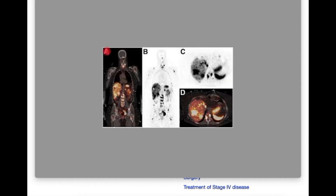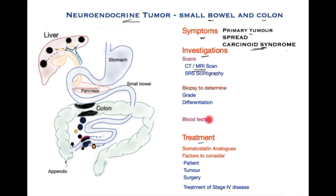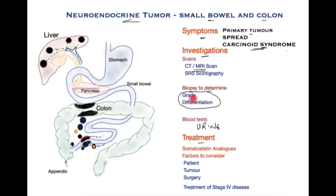This is discussed in much more detail in the specific video on investigations of neuroendocrine tumors. Apart from routine blood tests, there are specific blood tests to examine the secretion of chemicals from these tumors, and these tumors are also detected in urine tests. A biopsy is hugely helpful because we can determine how aggressive these tumors are by determining the grade, which is dependent on how quickly the tumor is dividing.